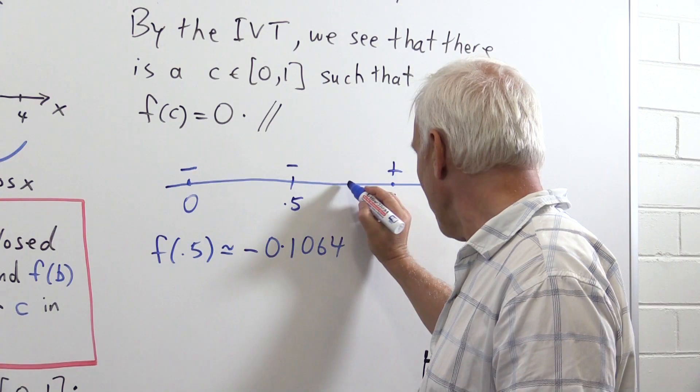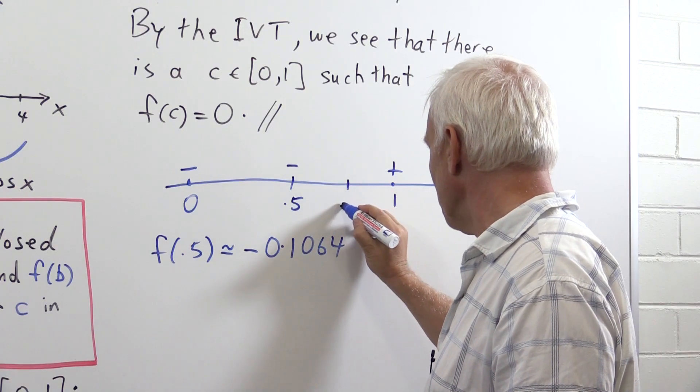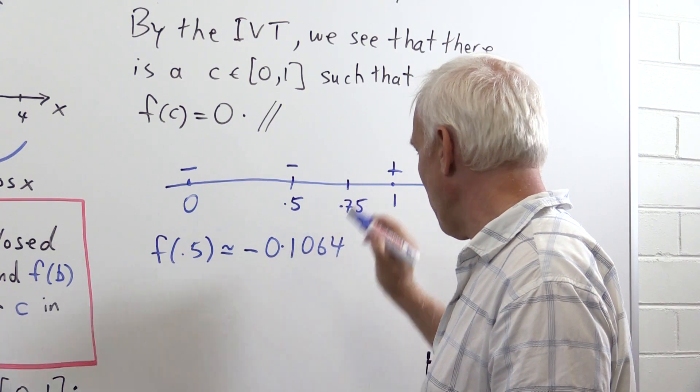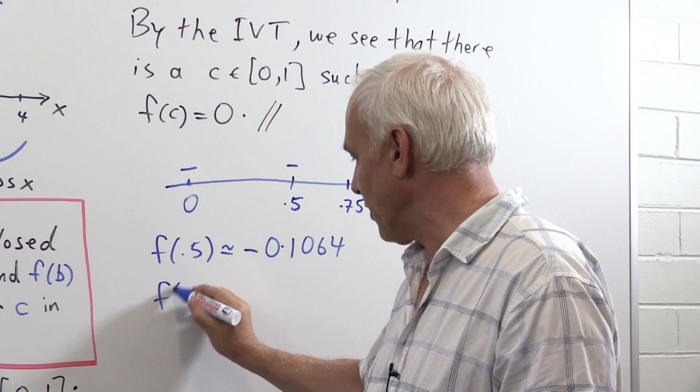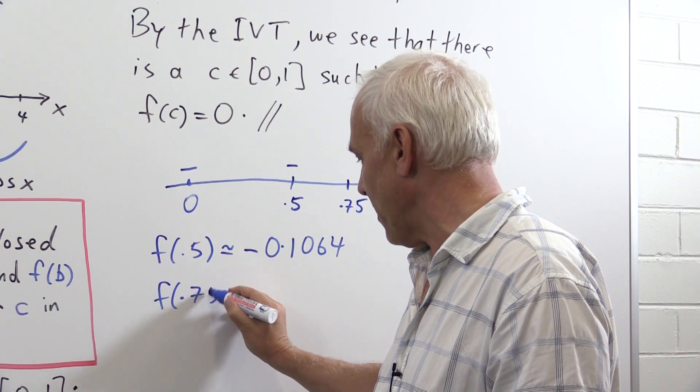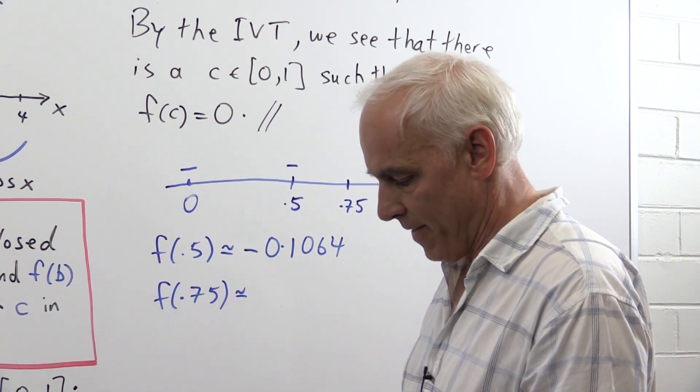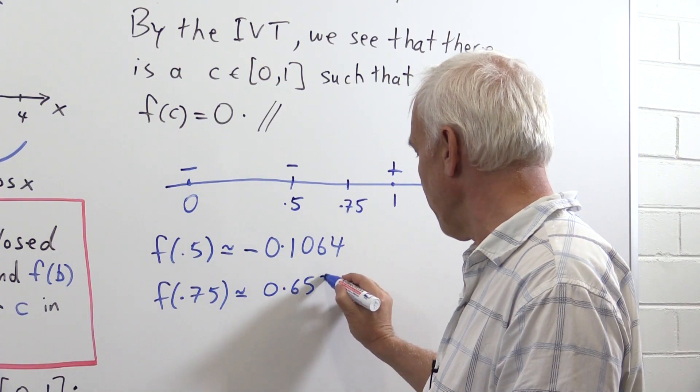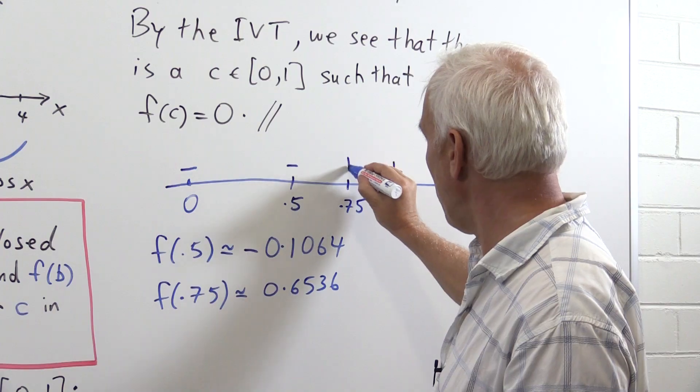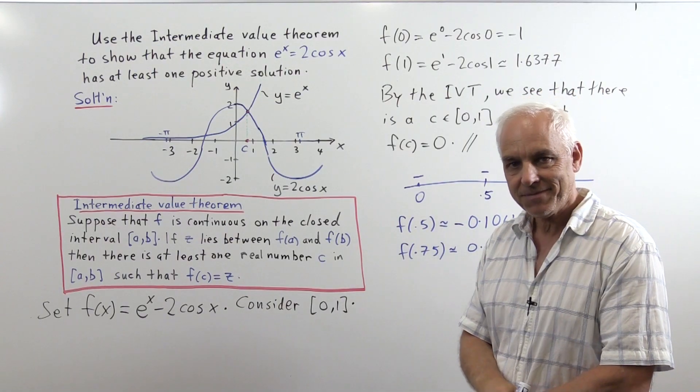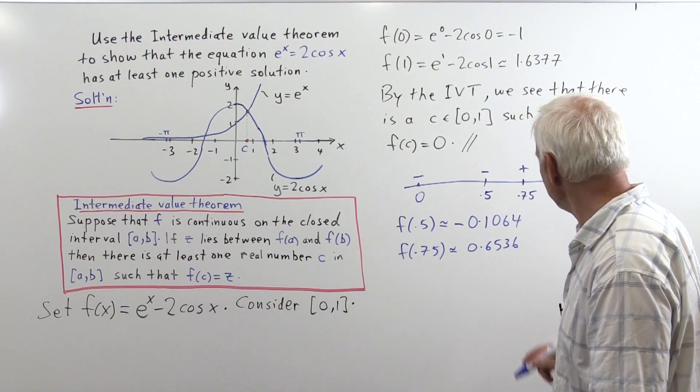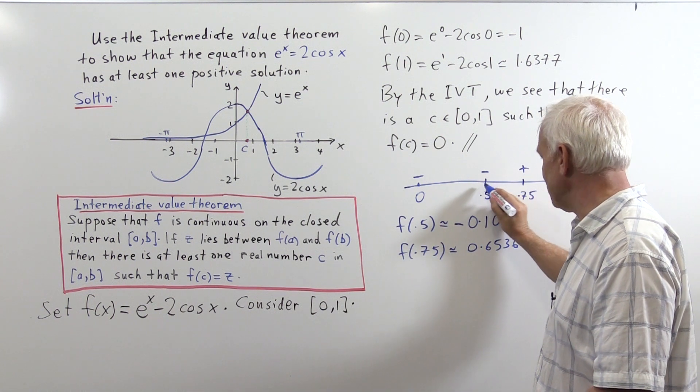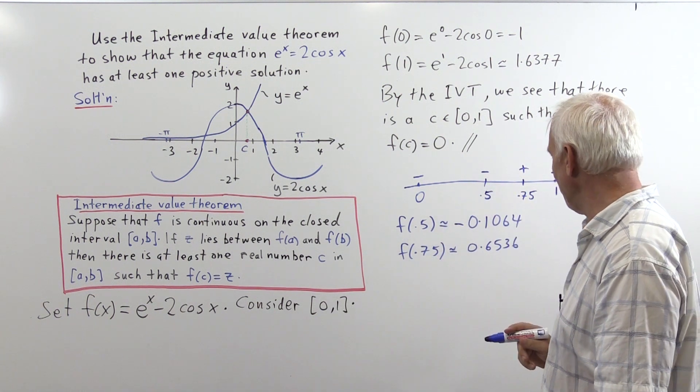Then Stevin said, let's subdivide this interval now into 2, midpoint being 0.75, and calculate f at 0.75. That's approximately 0.6536, which is a positive value, allowing us to deduce that now there must be a 0 somewhere between 0.5 and 0.75.